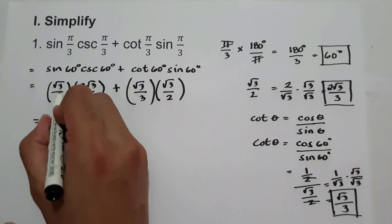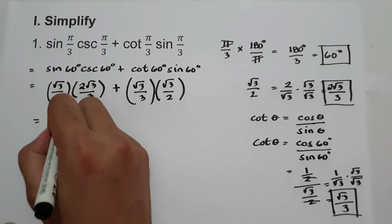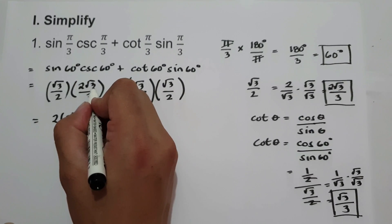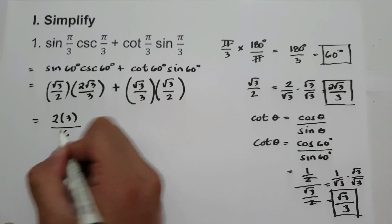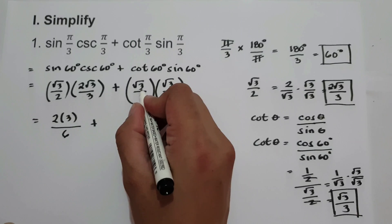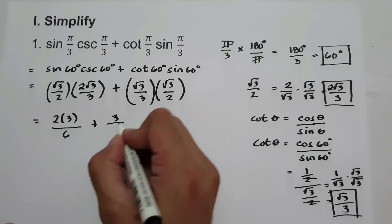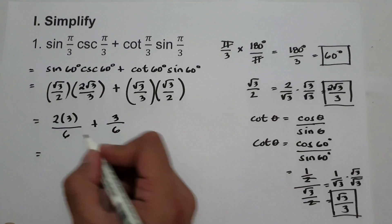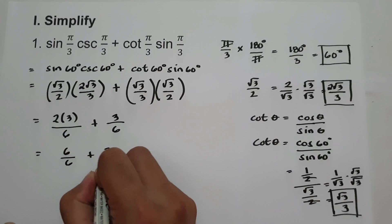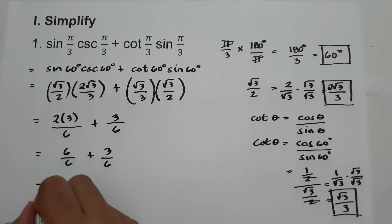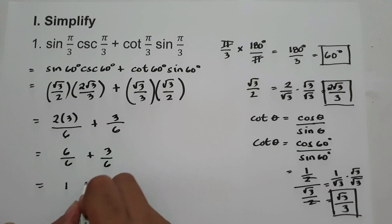Now let us multiply. For the first term: square root of 3 over 2 times 2 square root of 3 over 3 gives us 2 times 3 over 6, which is 6 over 6. For the second term: square root of 3 over 3 times square root of 3 over 2 gives 3 over 6. So we have 6 over 6 plus 3 over 6. Six divided by 6 is 1, and 3 over 6 simplifies to 1 half.